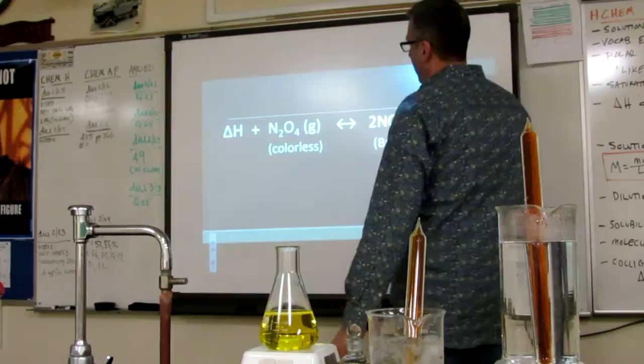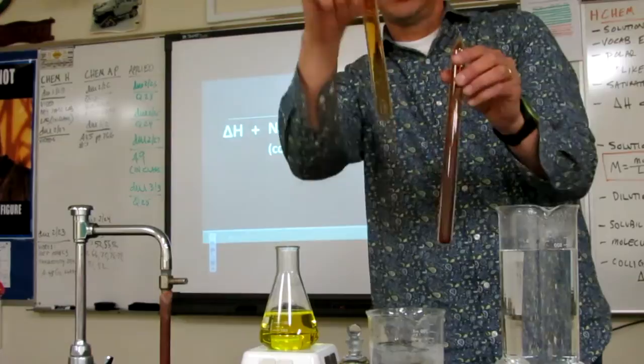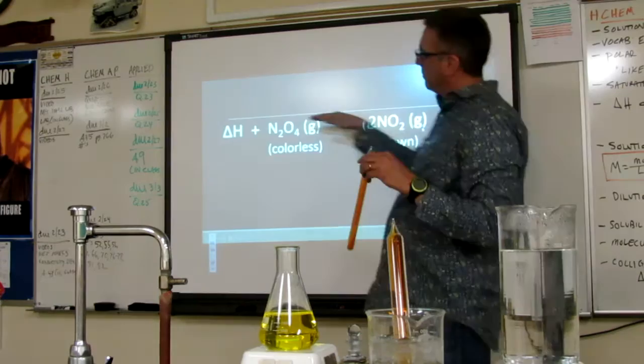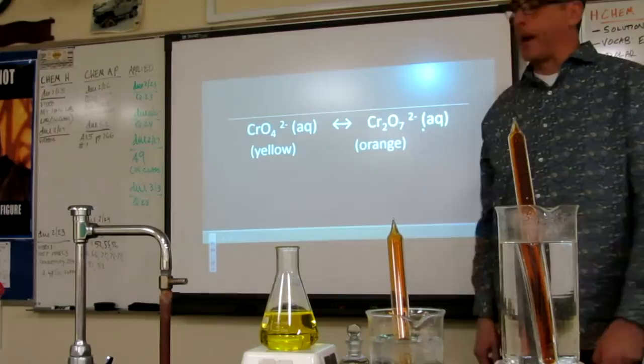Likewise, if I cooled it down, it would shift to go towards the heat, and it would become more colorless. And that's exactly what happened when we put these next to each other again. You can see the one that was colder became less intense, that means it shifted to the N2O4 side to go towards the heat. The one that was hot shifted towards the NO2 side, it became a darker brown, so it shifted away from the heat.